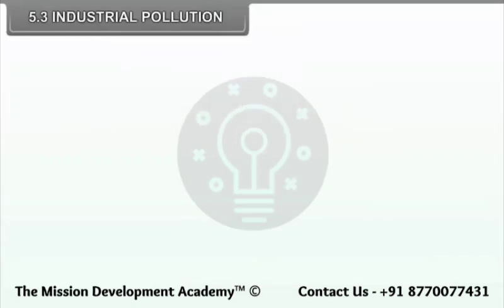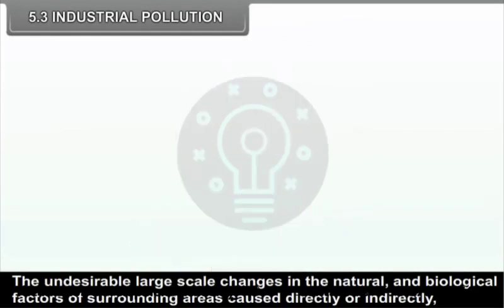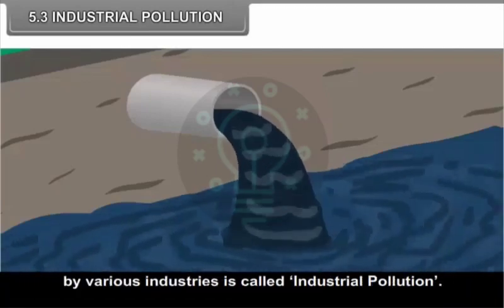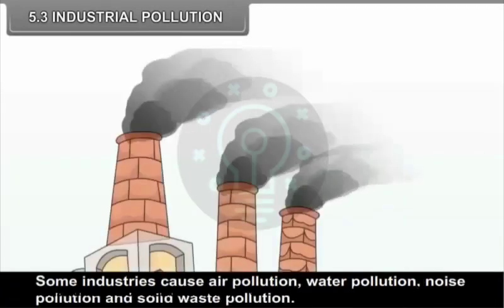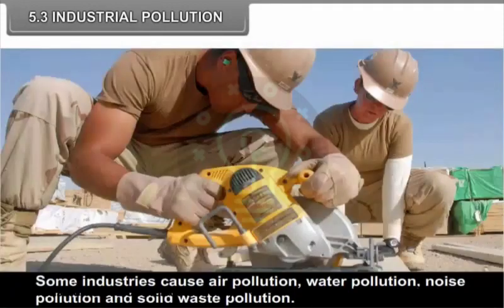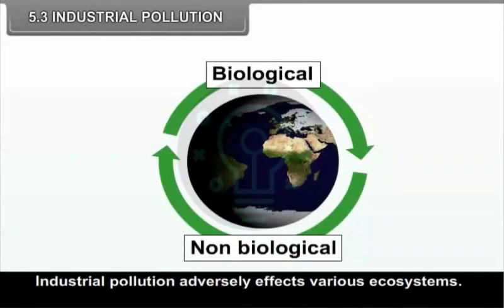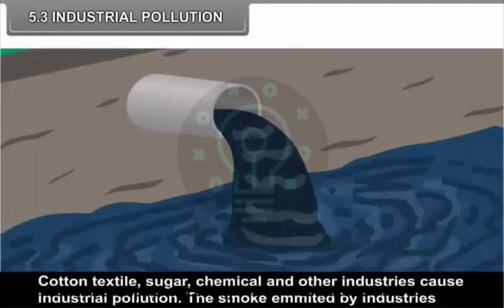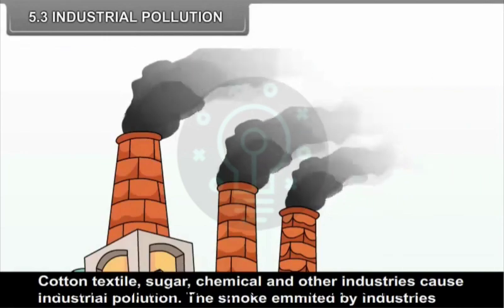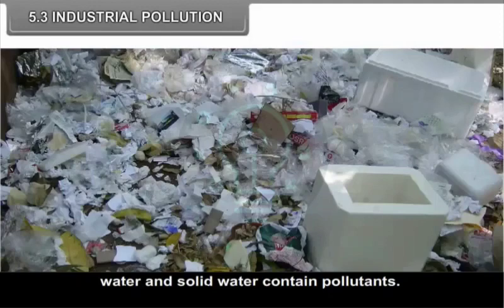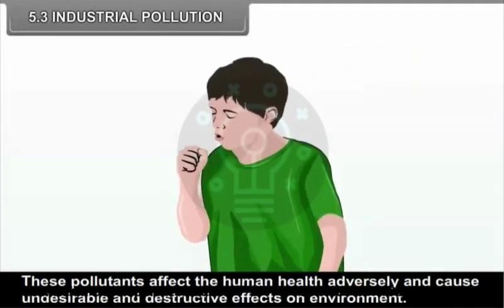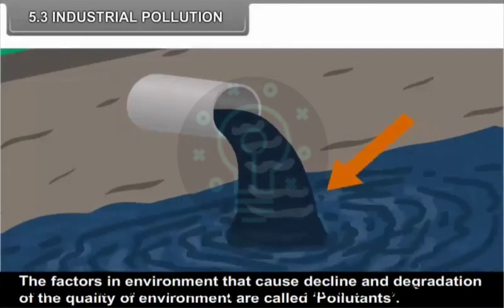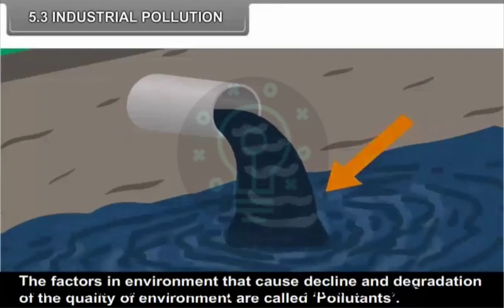The undesirable large-scale changes in the natural and biological factors of surrounding areas caused directly or indirectly by various industries is called industrial pollution. Some industries cause air pollution, water pollution, noise pollution, and solid waste pollution. Industrial pollution adversely affects various ecosystems. Cotton textile, sugar, chemical and other industries cause industrial pollution. The smoke emitted by industries, water, and solid waste contain pollutants that affect human health adversely and cause destructive effects on the environment. The factors in the environment that cause decline and degradation of the quality of environment are called pollutants.